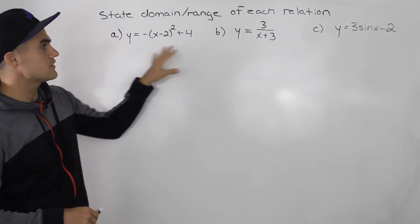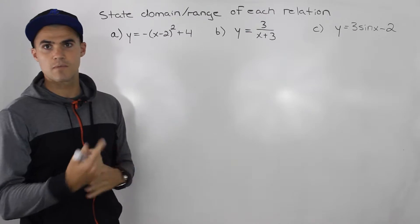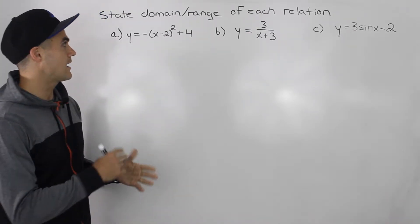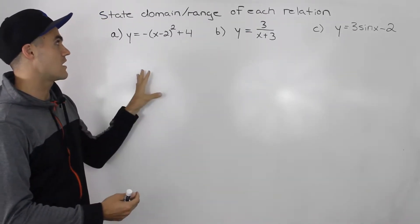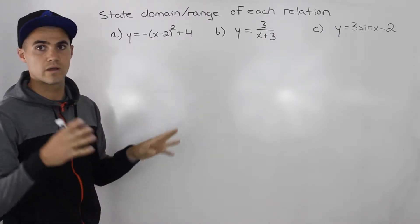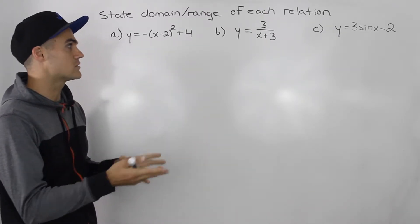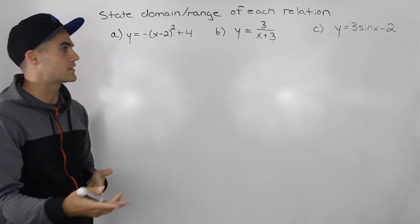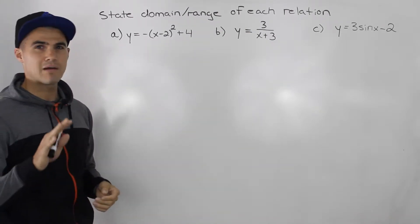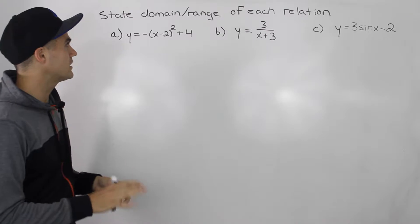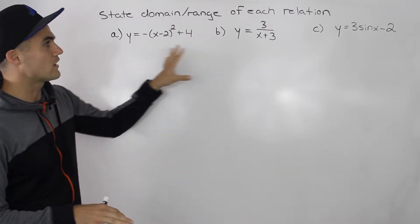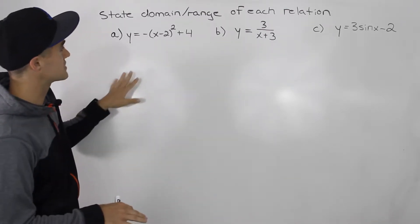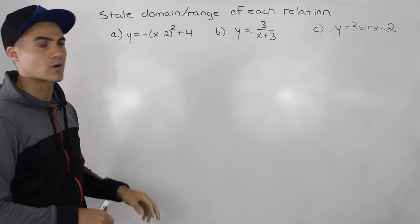Notice how all of these relations are transformations of parent functions. You can go through the process of graphing these with the transformation algorithms — finding the a, k, d, c values, mapping them, etc. But by this point, you should be pretty comfortable with making a rough sketch of each of these, and then from that rough sketch you can find what the domain and range is.